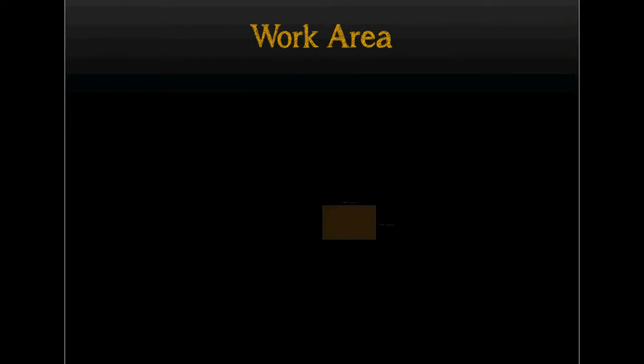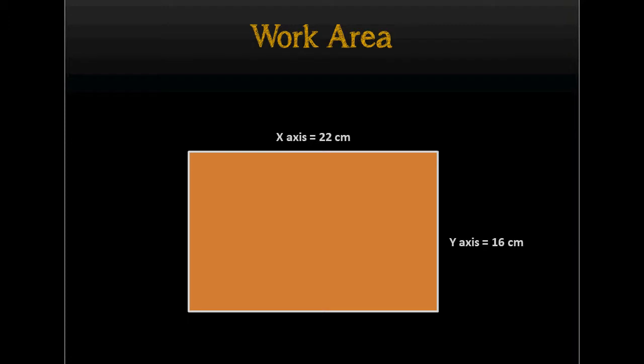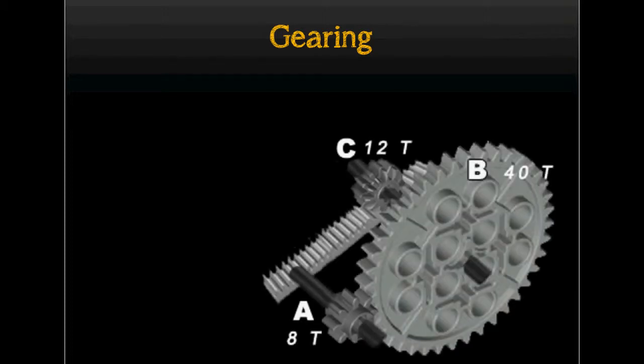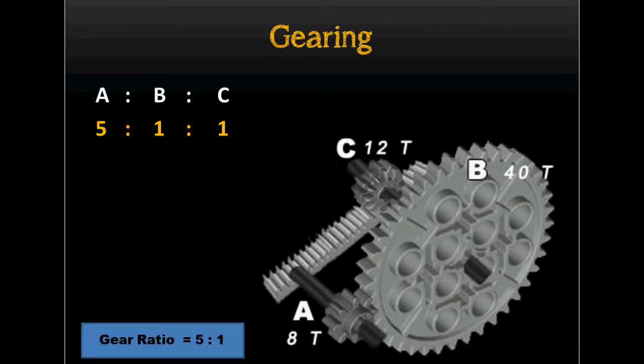Our robot has a work area like this. This is the robot from the rear view. In the robot's mechanics, we use several combinations of gears to obtain an optimal torque. 8-tooth gears are series-mounted with 40-tooth gears, and 40-tooth gears are parallel-mounted with 12-tooth gears. Gear A is coupled with the NXT motor, and Gear C is the gear which runs on the rack.